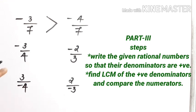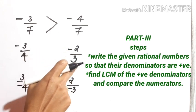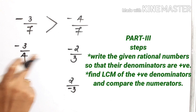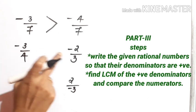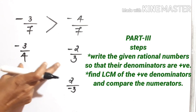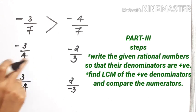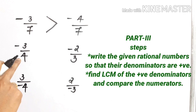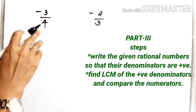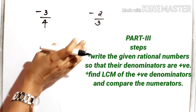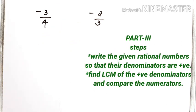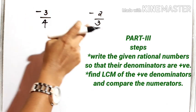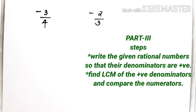Clear now? Next question: minus 3 by 4 and minus 2 by 3. Here also we can see positive denominators or positive Q's, but these two are not equal — 4 is not equal to 3. So, in this question, first we have to convert 4 and 3 into equal denominators. We can use either the LCM method or cross multiplication.